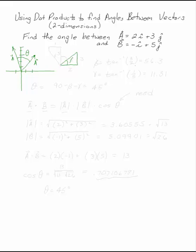let's let this angle be beta. Beta can be found as the arctan of three halves. That's 56.3.